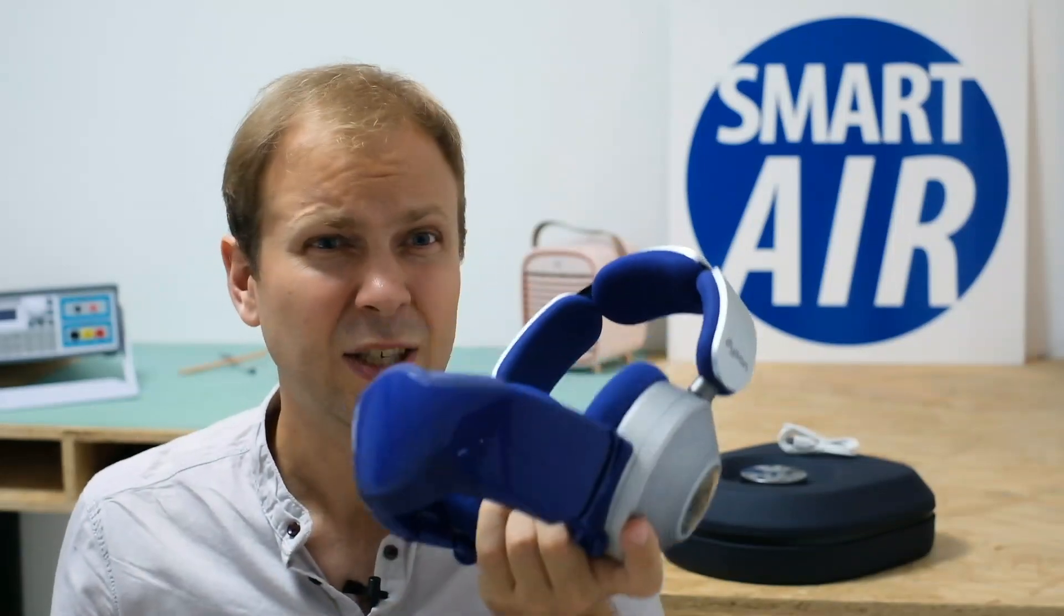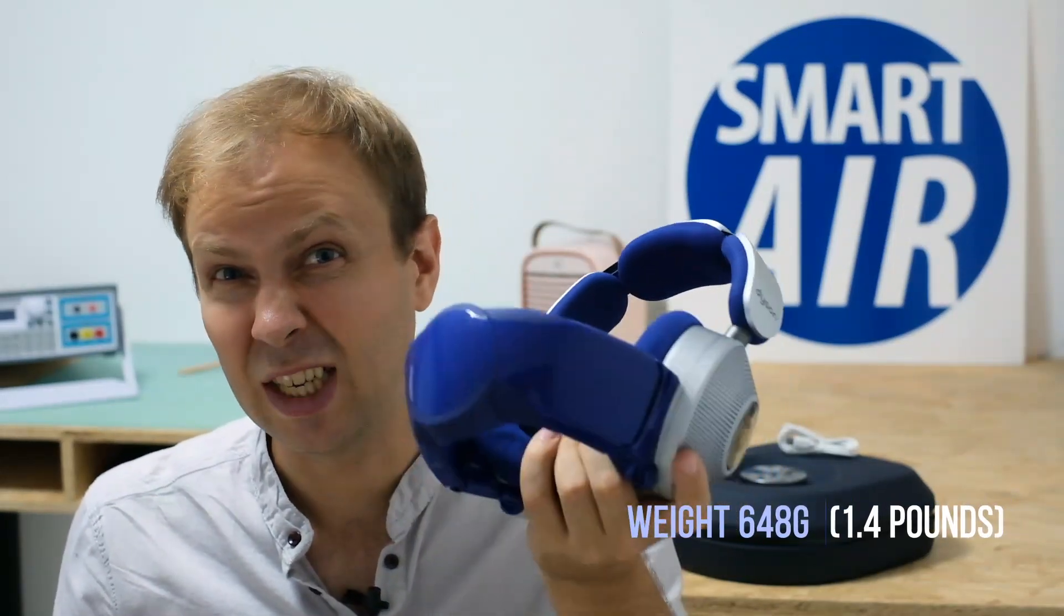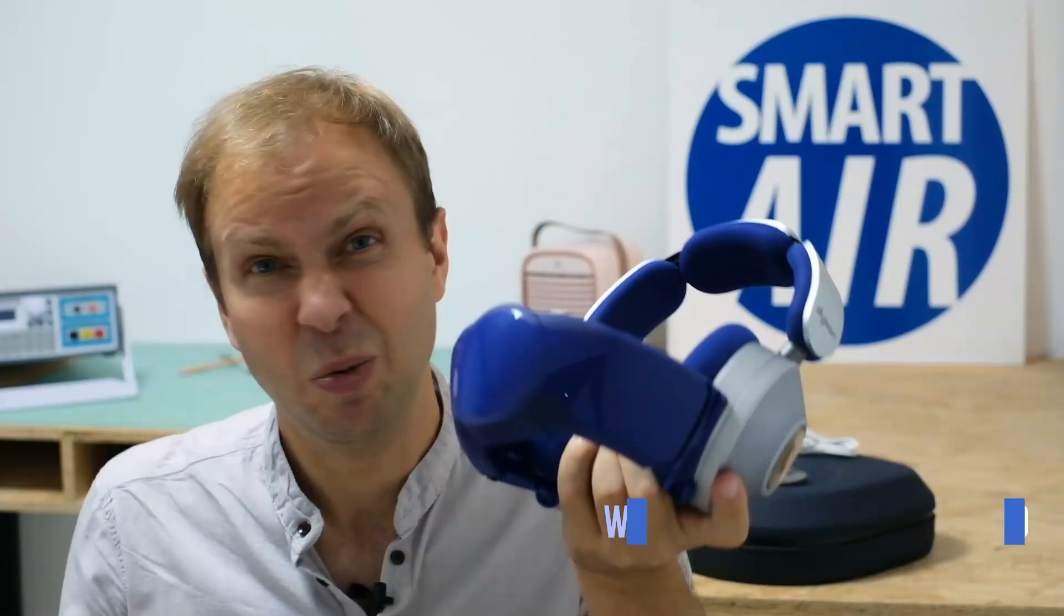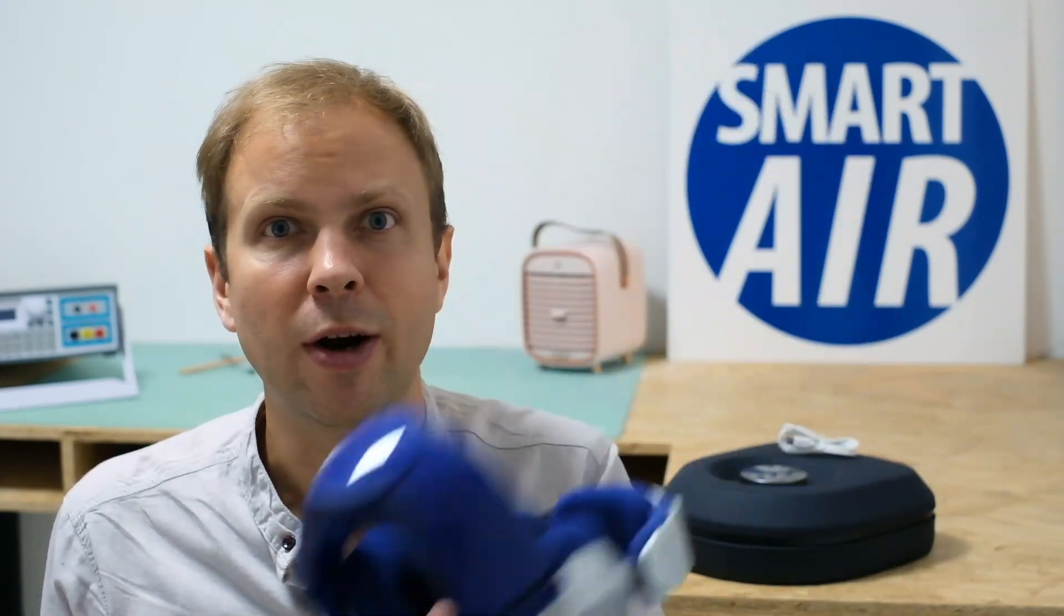But then on the downside this thing is quite heavy it weighs in at about 650 grams that's 1.4 pounds and that's pretty heavy to be having on your head if you're running around so yes the filtration might be beneficial over a mask when you're going for a run but no you probably don't want to be wearing this when you're running anyway because your neck might fall off you might hurt your neck.